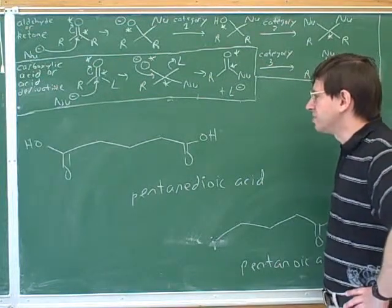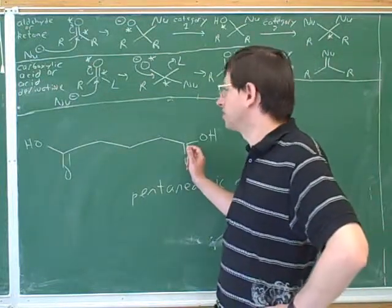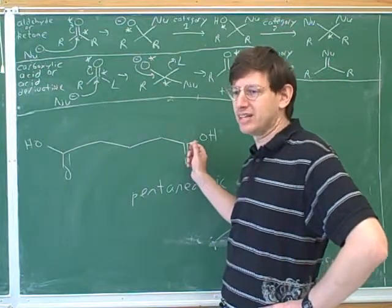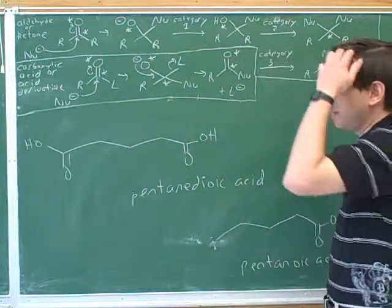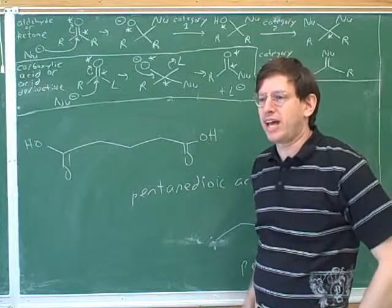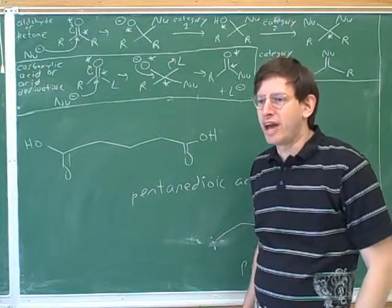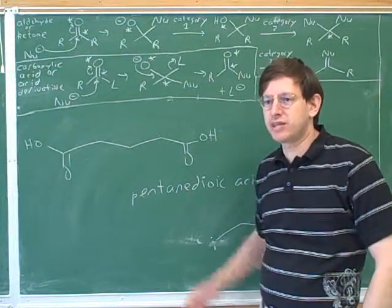All right. And we don't need numbers because carboxylic acid groups are always terminal. They have to be on the end. Now, these actually are pretty important, these dioic acids. Some of these come up a lot in biochemistry or in the Krebs cycle and stuff.